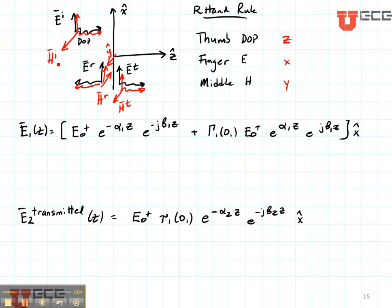So for our incident field, the magnetic field is Y polarized. For our transmitted field, it's also Y polarized. And for our reflected field, it's minus Y polarized.